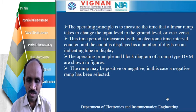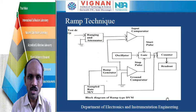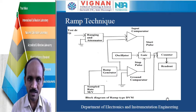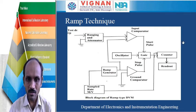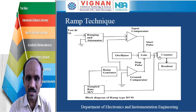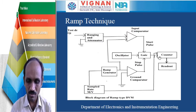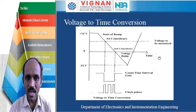We will now see what is the ramp type DVM and its principle of operation. In the ramp type DVM, the main blocks are: ranging and input attenuator, input comparator, ground comparator, ramp generator, sampled rate multivibrator, oscillator, gate, counter, and readout. The main principle used in the ramp type DVM is voltage-to-time conversion.